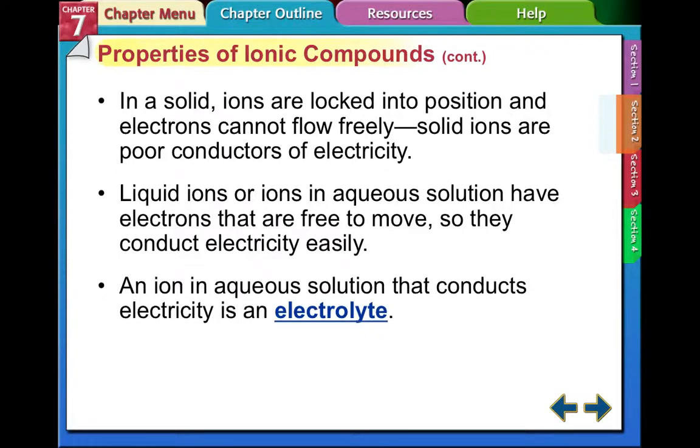In a solid, the ions are locked into positions and the electrons cannot flow freely. Solid ions are poor conductors of electricity. Liquid ions, or ions in aqueous solution, have electrons that flow freely so they conduct electricity easily. We did this at the very beginning of the chapter when we had the conductivity meter and we looked at the different solutions. If we would have looked at the conductivity of the solids themselves, there wouldn't have been conductivity or electricity flowing. They need to be in an aqueous solution for the electricity to flow. So we call those electrolytes when they're in a solution.